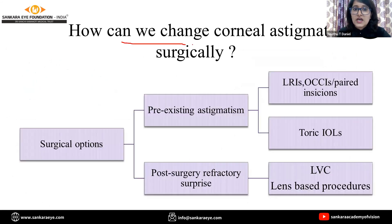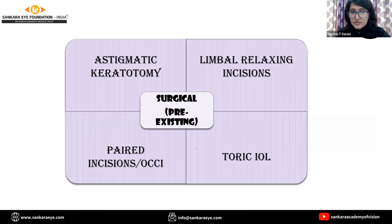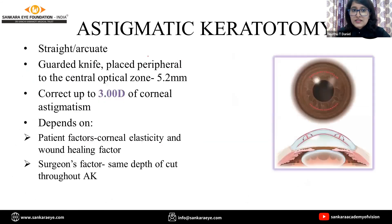The real point of this talk is how we can change the corneal astigmatism surgically. There are two scenarios: pre-operatively the patient is diagnosed to have astigmatism, or in some cases there is a post-surgery refractive surprise. First, we'll see how to tackle pre-existing astigmatism. The first manipulation option is astigmatic keratotomy, where we give a straight or arcuate incision placed peripheral to the central optical zone of 5.2 mm.